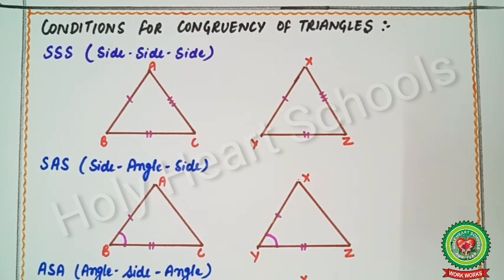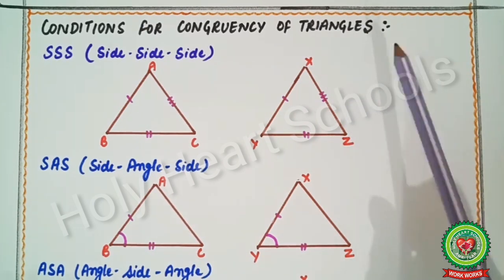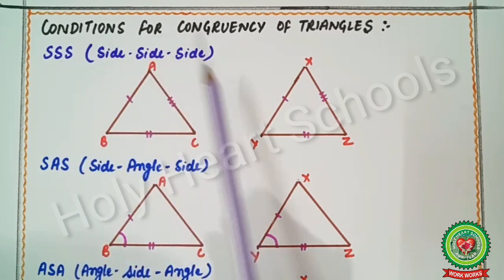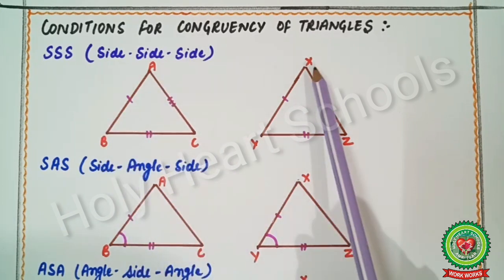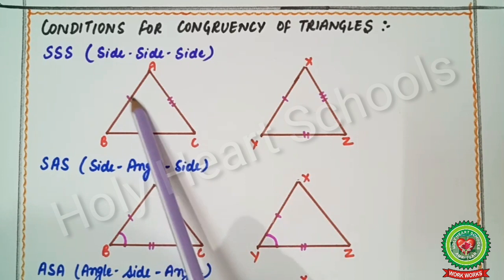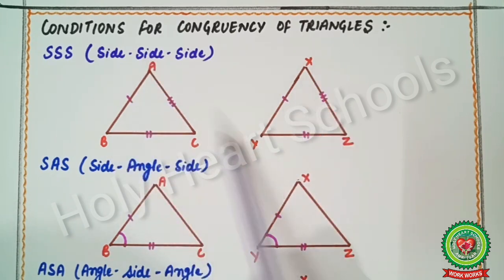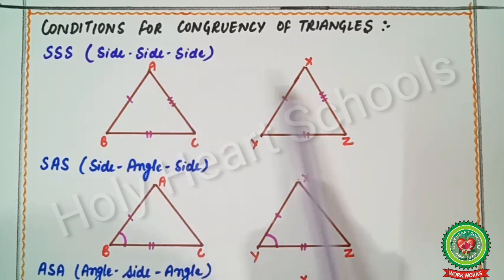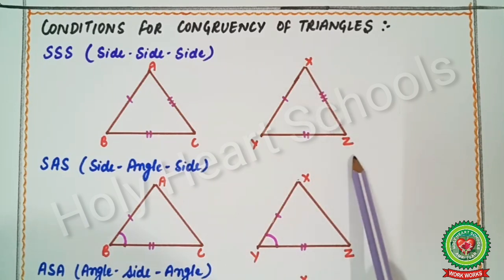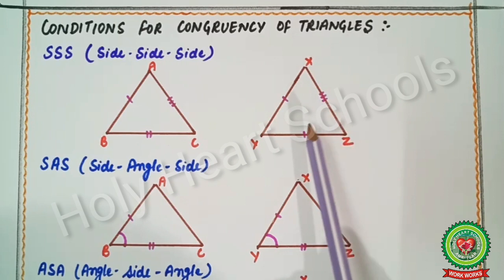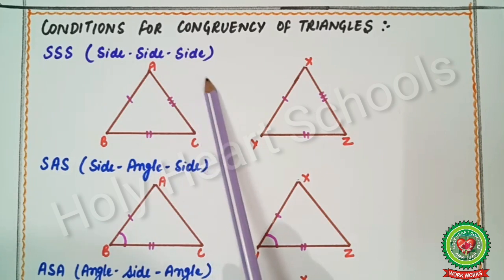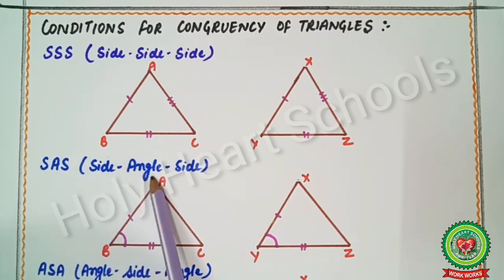Now we will study the tests used for proving congruency of two triangles. First is SSS — Side Side Side. In triangle ABC and triangle XYZ, if AB = XY, BC = YZ, and AC = XZ, then all three sides are equal. We can apply the SSS test when all three corresponding sides are equal.